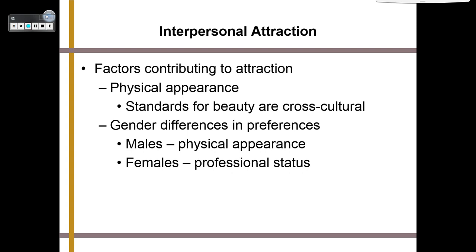Moving on from prejudice and discrimination, we're now going to talk about interpersonal attraction. There are several factors that contribute to attraction, including physical appearance and gender differences in preferences. We know that males tend to prefer physical appearances and females tend to prefer professional status — however, within the last couple of decades we've found this is shifting. Now females are expecting partners to be more physically attractive, and males are expecting partners to have more professional status.